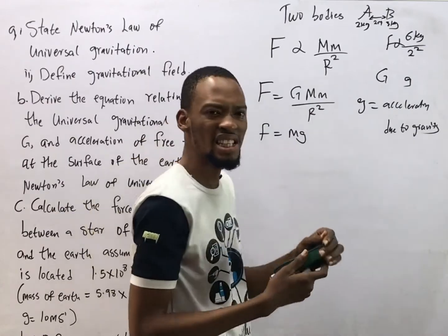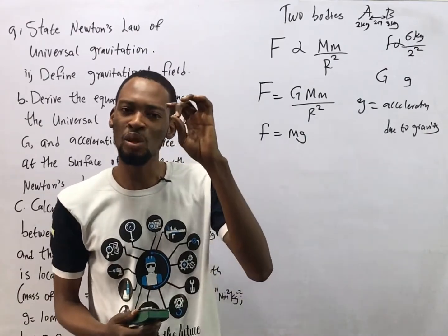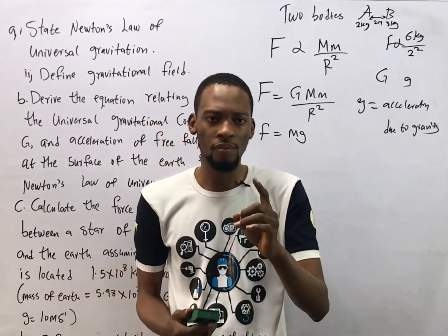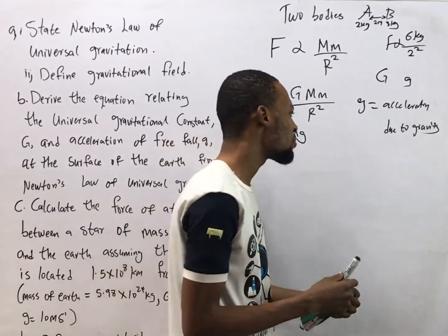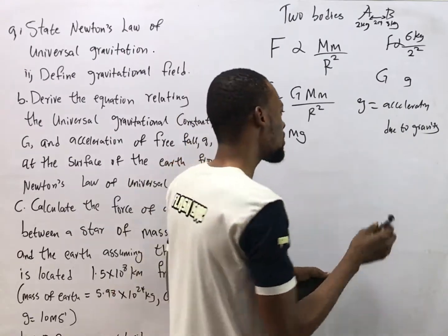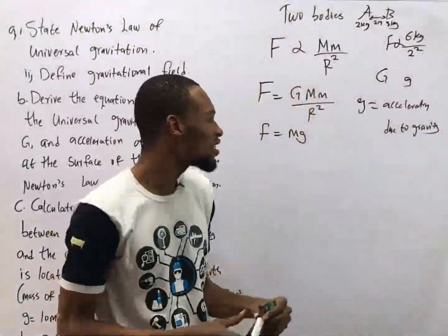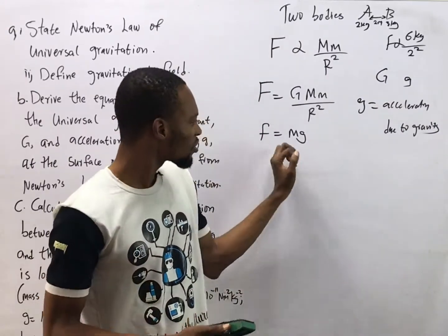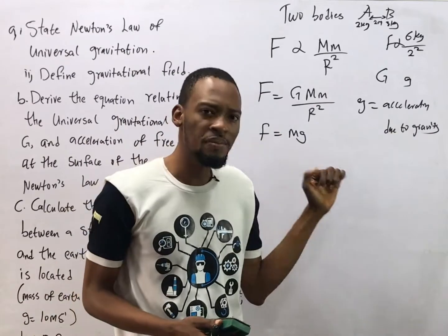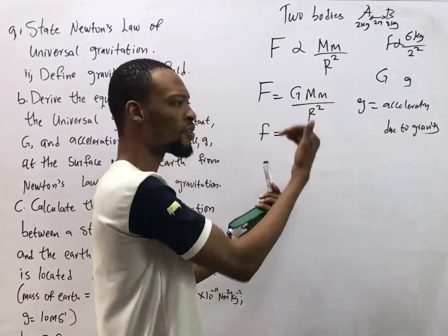Newton's First Law states that a body in motion will continue in that state unless acted upon by a force. The Second Law states that the rate of change of momentum is proportional to the applied force, so force is proportional to rate of change of momentum. The Third Law says action and reaction are equal and opposite. For bodies falling downward, force equals mg.